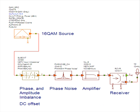The system used to introduce the RF impairments is shown here. Here we have a 16 QAM source, one model that is mathematically introducing phase imbalance and amplitude imbalance as well as DC offset on the baseband signal.